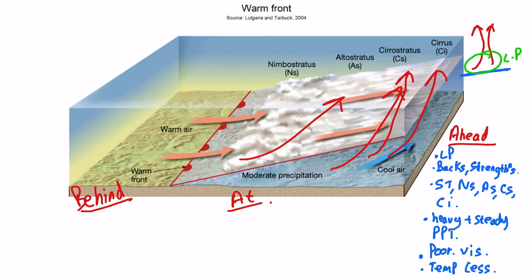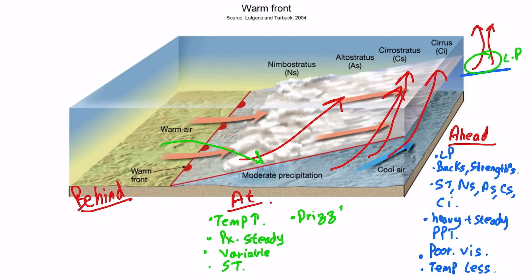At a warm front, when it's passing right above us, we can expect the temperature to rise because the warm air is approaching. The pressure remains steady and the winds are variable. The clouds seen here are stratus clouds. The rain stops and it starts to drizzle. The visibility is really bad because of fog — stratus cloud seen on the ground is nothing but fog, which is why we have a lot of fog and poor visibility at a warm front.